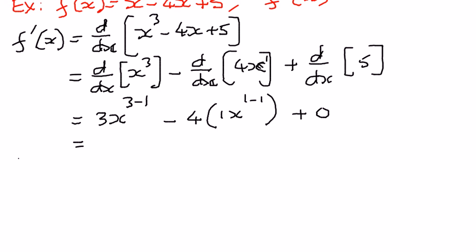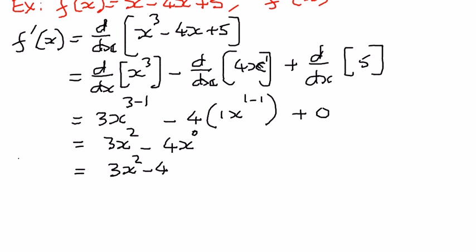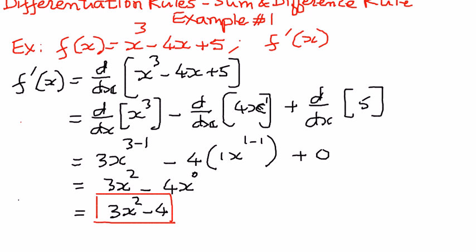So we can simplify further. 3x to the power of 3 minus 1 is 3x to the power of 2, minus 4 times 1 is 4. x to the power of 0 will equal 1 in the next step, since any number raised to the power of 0 is equal to 1. Plus 0, we drop that. So therefore this is going to be 3x to the power of 2 minus 4. That is our answer — the derivative of x to the power of 3 minus 4x plus 5 is equal to 3x squared minus 4.